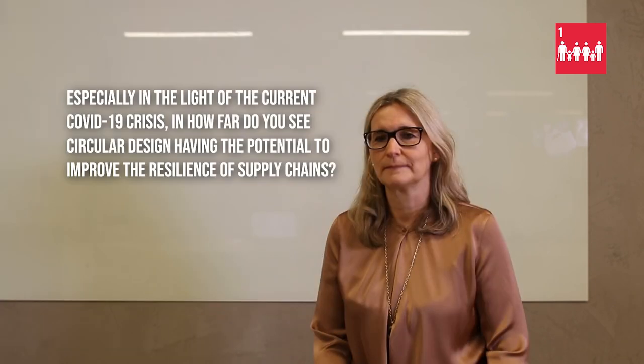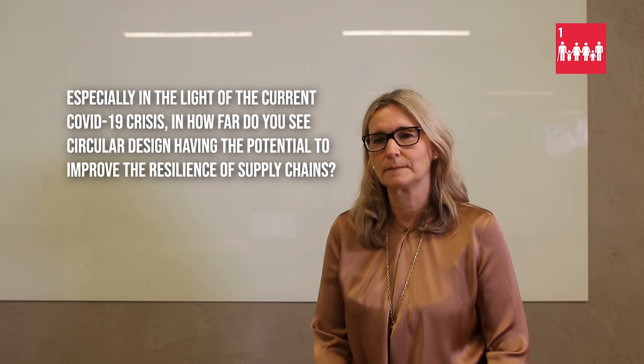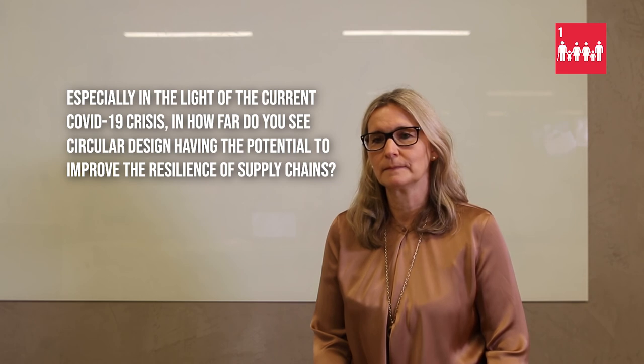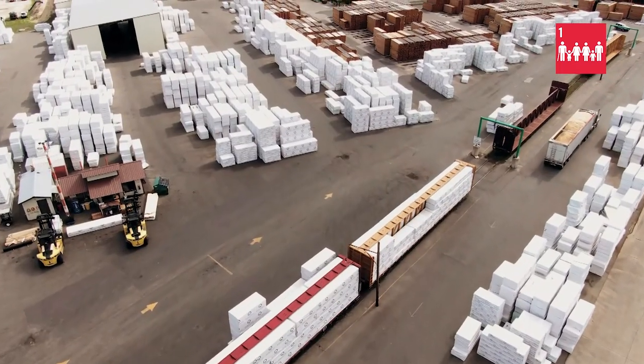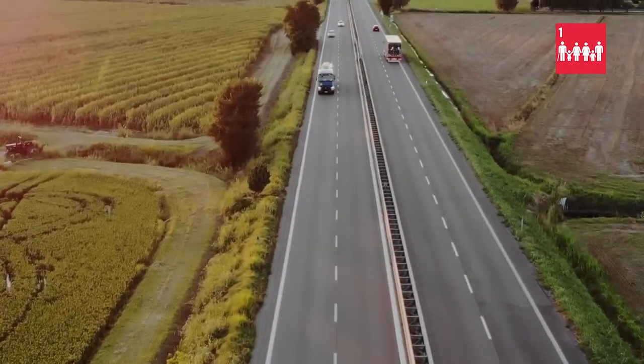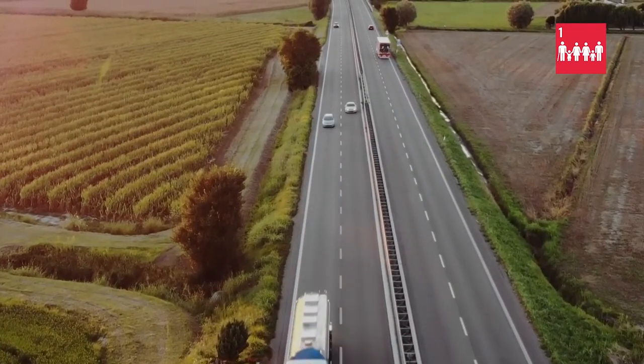Companies have to start designing products for circularity, especially in the light of the current COVID-19 crisis. How far do you see circular design having the potential to improve the resilience of supply chains? COVID-19 interrupted global supply chains immensely. If companies start building products based on already used materials, we would already have them in our economic systems and would not be so dependent on availability from global supply chains. COVID has shown us that we urgently need to revise our supply chain approach and rethink new strategies like relocalization strategies.